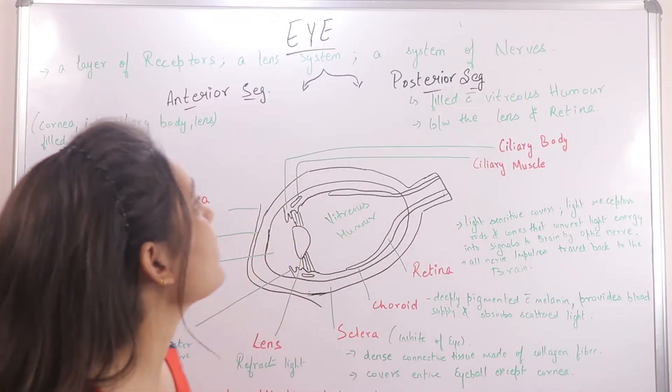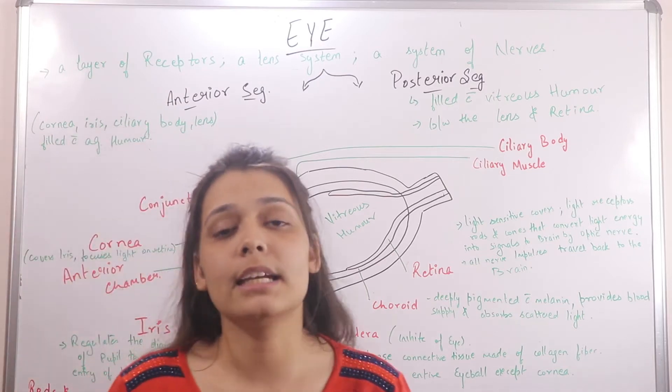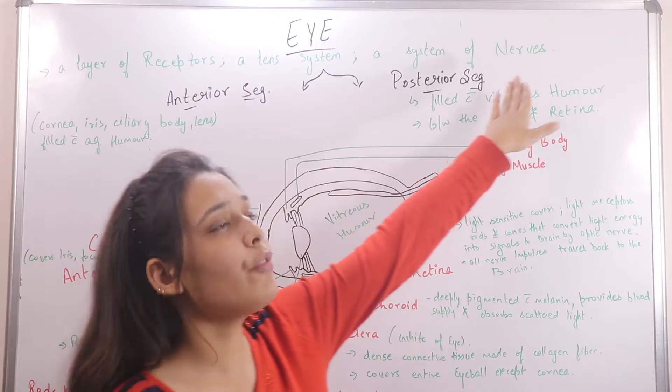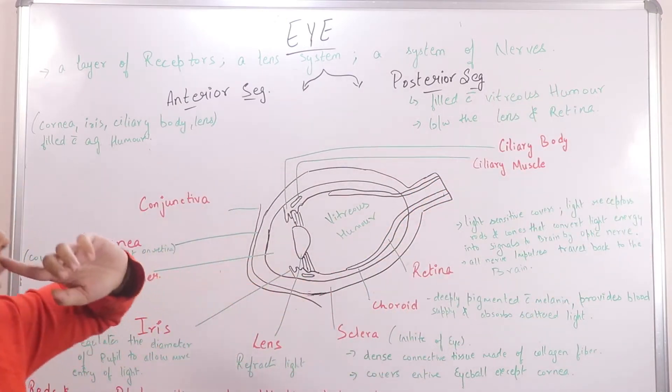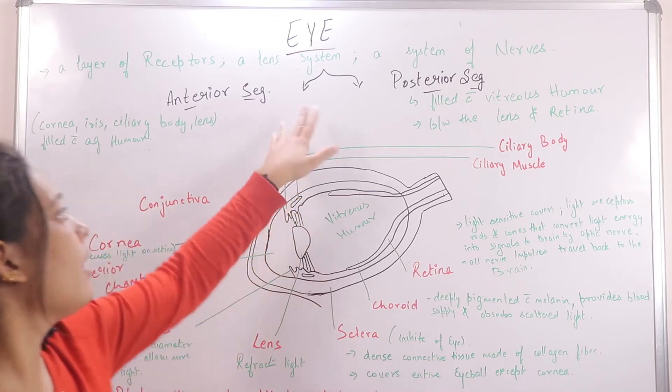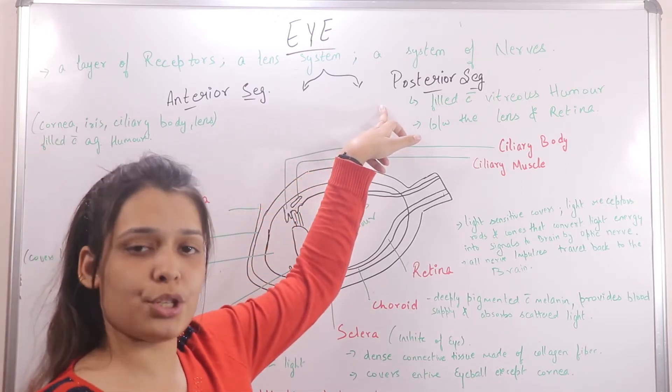Human eye. What is mainly a layer of receptors, a lens system, and a system of nerves. Our eyes are mainly divided in two parts: the first one is the anterior segment and the second one is the posterior segment.